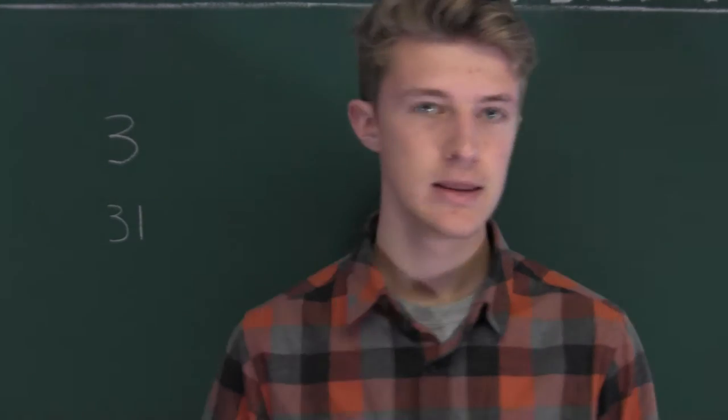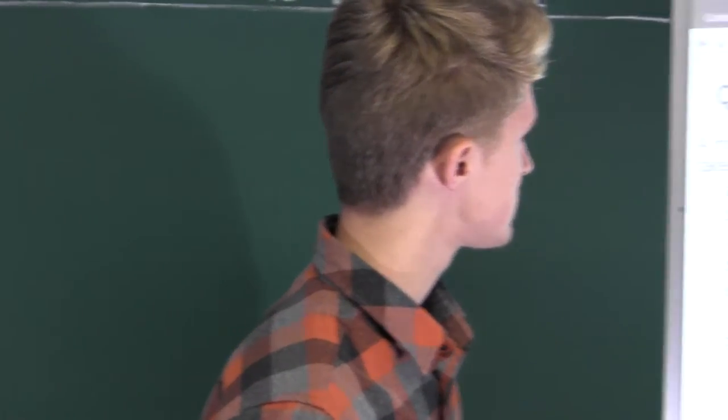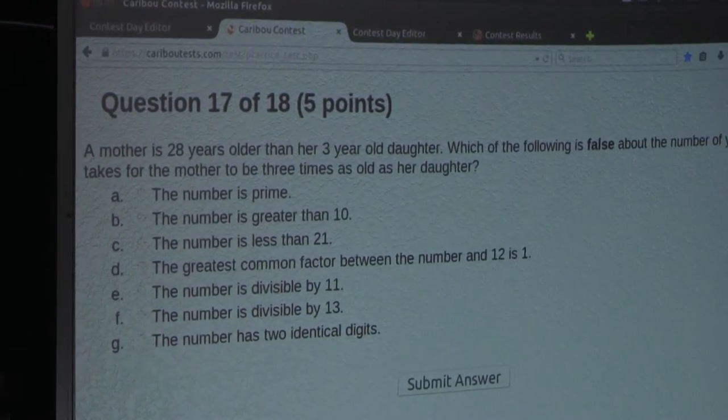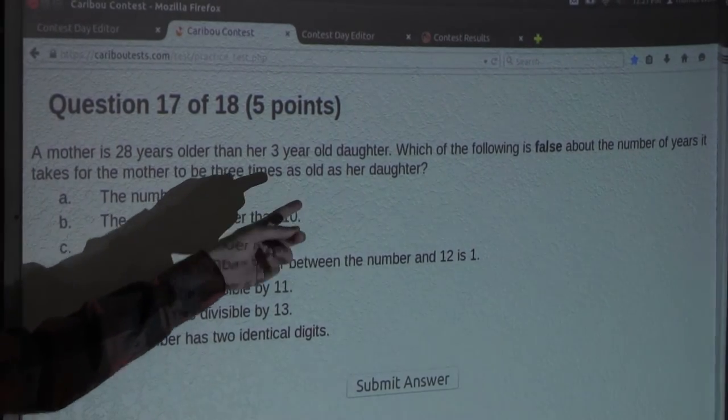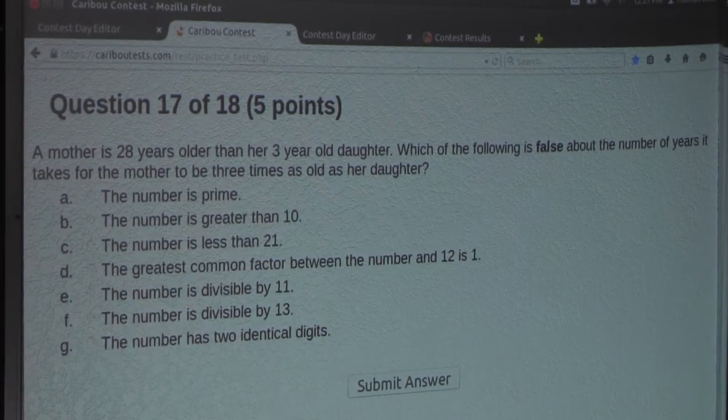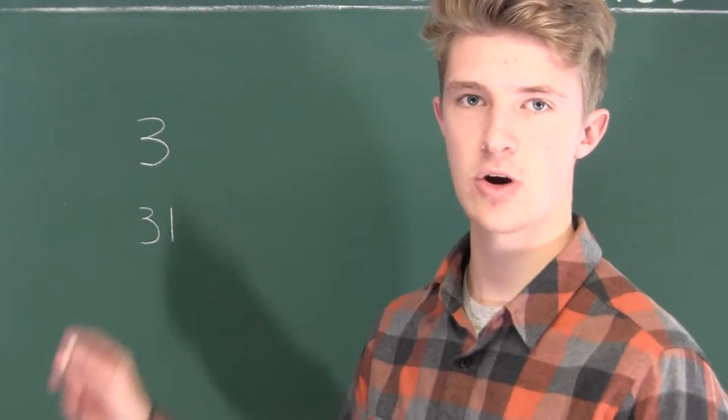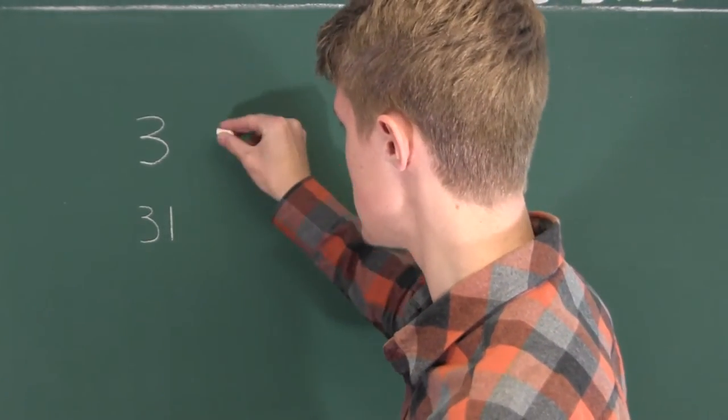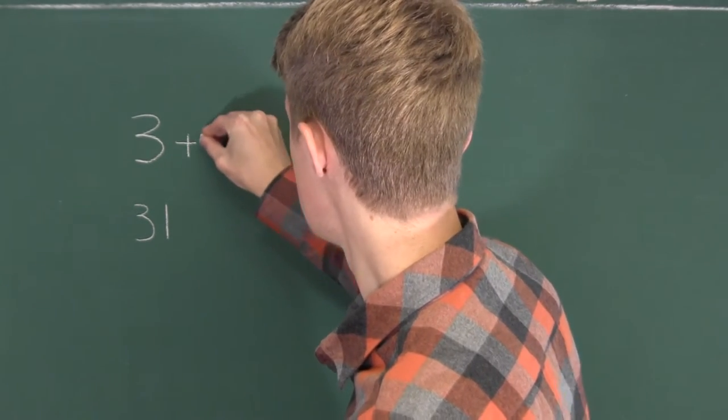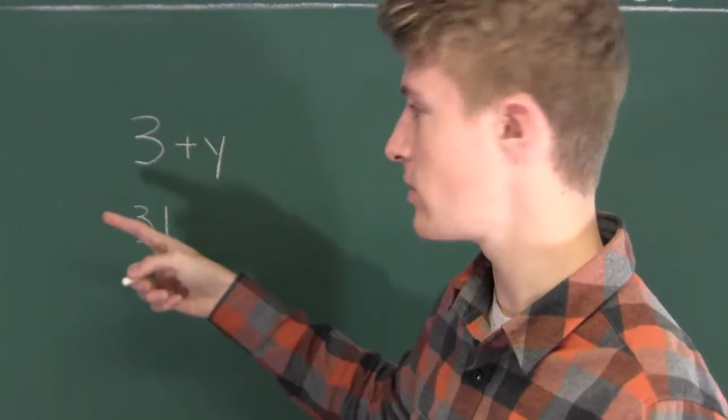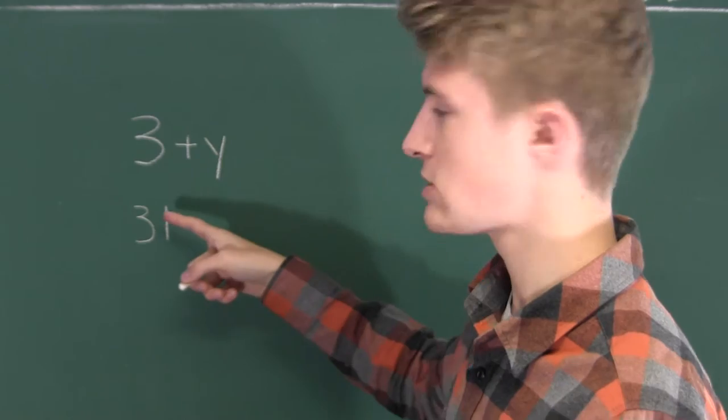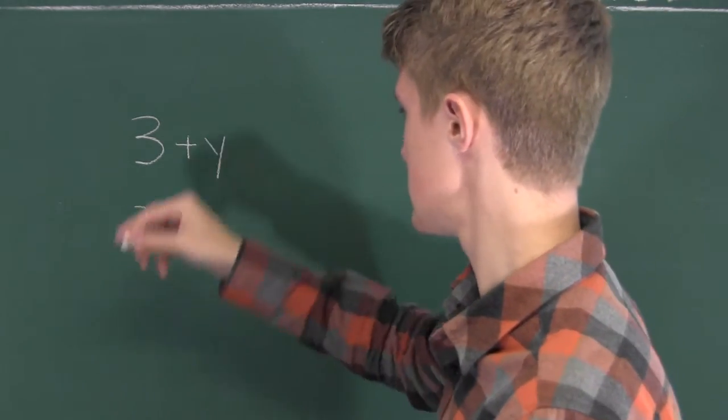Alright, now what we want to know is how long it takes for the mother to be 3 times as old as her daughter. So we want to know how many years this takes, so let's call that number of years Y. We have to add that to not only the daughter's age now, but also the mother's age now, because that's in the future.